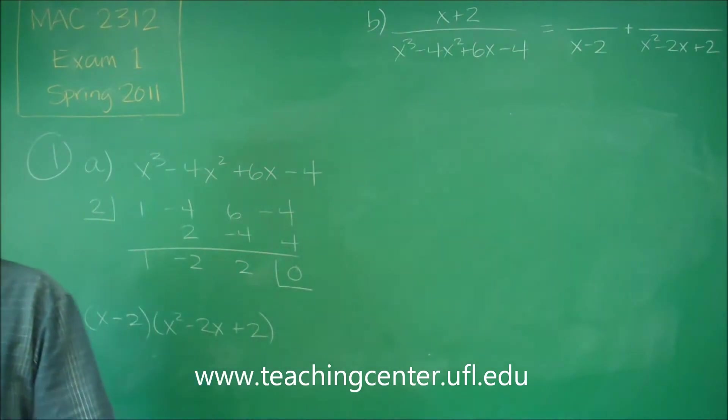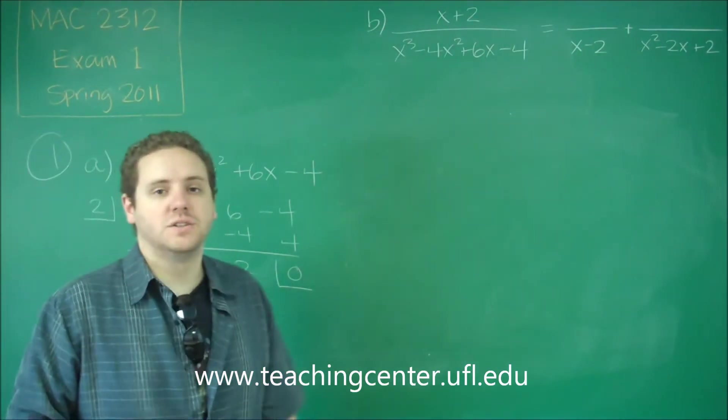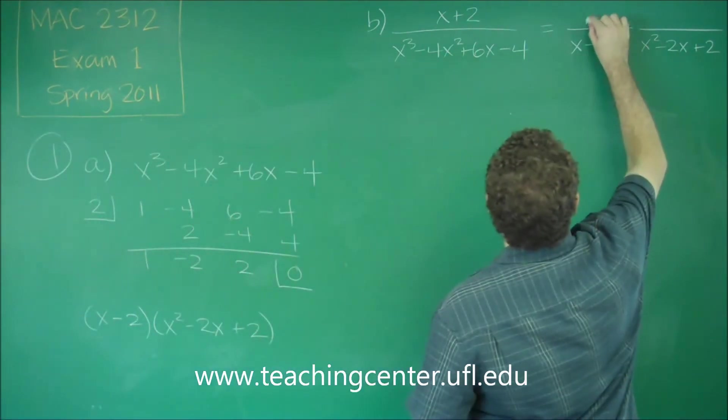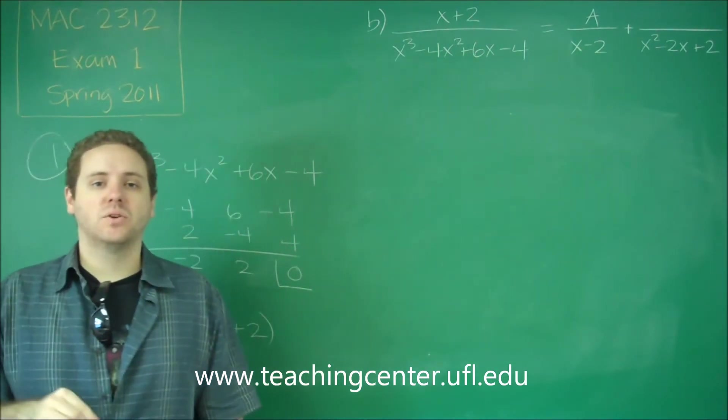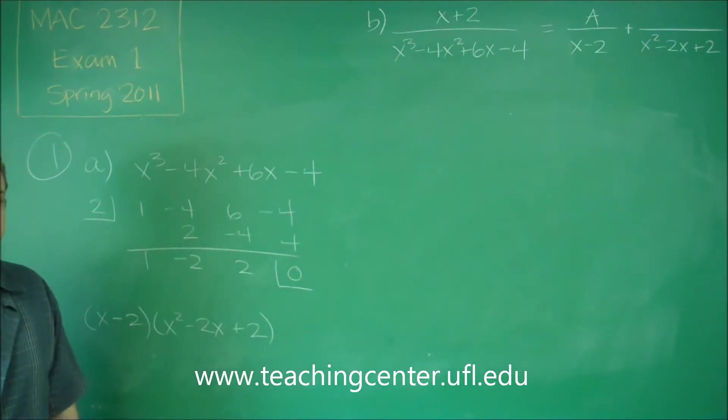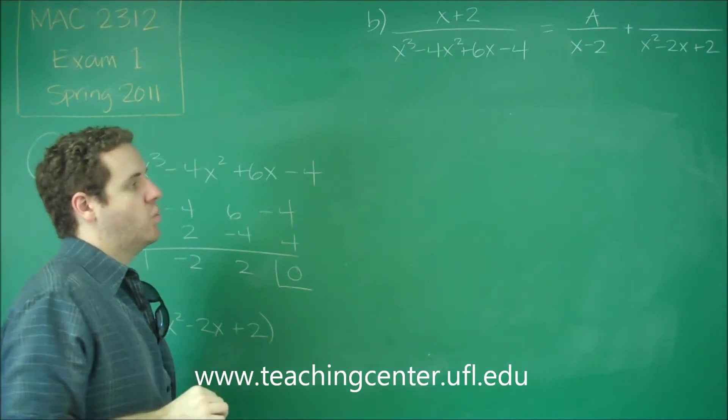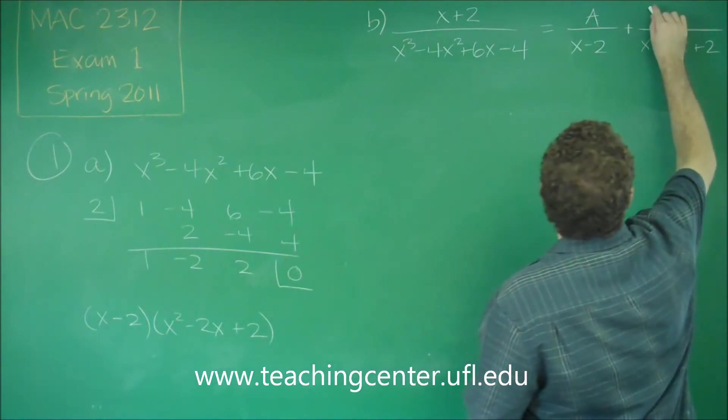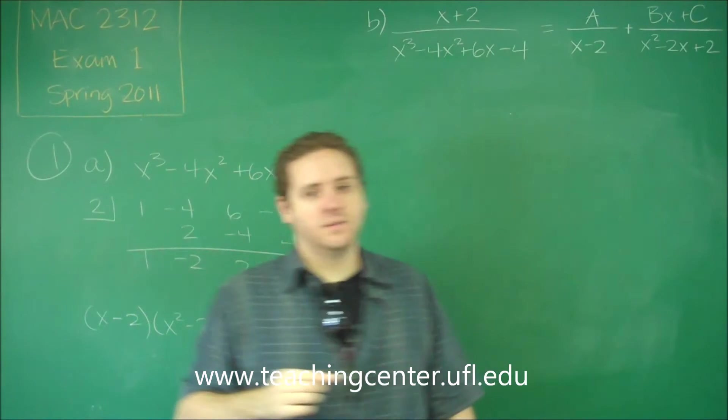We're going to have x minus 2 and a fraction with the denominator of x squared minus 2x plus 2. So now we just need to think about what goes on the top. Remember that if you have a linear factor on your denominator, you're just going to have a constant on the top. So we'll put A here over x minus 2. If you have a quadratic expression that's not factorable in your denominator, your numerator has to be one degree less, meaning a degree one function. So we have to have Bx plus C on top of that one.